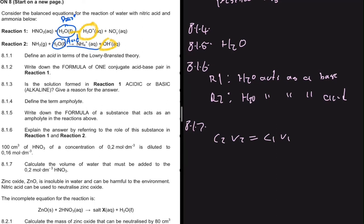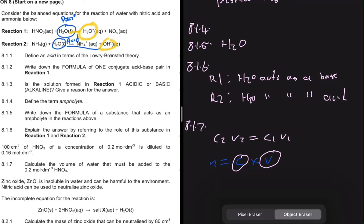This formula works because the number of moles equals concentration multiplied by volume. If you change the volume of the substance, the concentration also changes such that the number of moles stays the same. Changing the volume has no effect on the number of moles — the concentration changes accordingly so the number of moles remains intact.